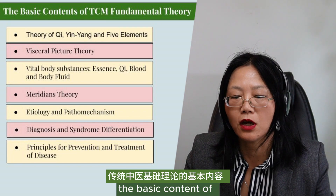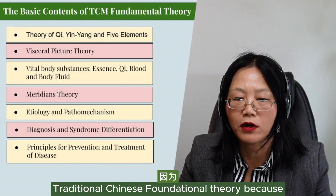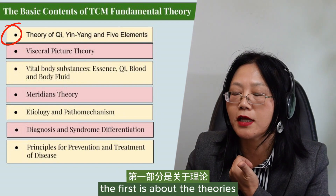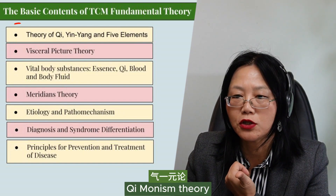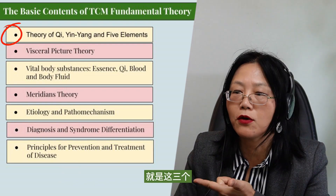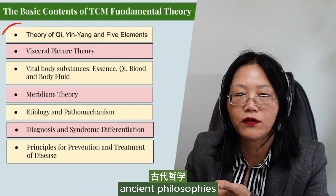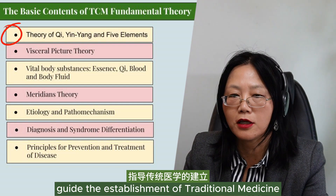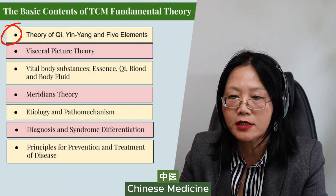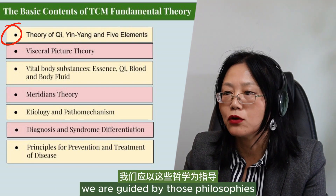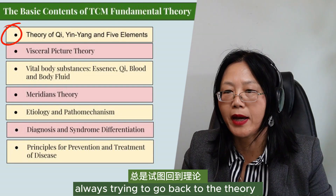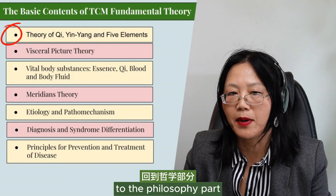The basic content of traditional Chinese foundational theory includes several parts. First is the qi theory, the qi monist theory, yin-yang theory, and the five element theories. Those are the three ancient philosophies that guide the establishment of traditional medicine. When we practice Chinese medicine, we are guided by those philosophies. Our thinking always tries to go back to the theory, to the philosophy part.